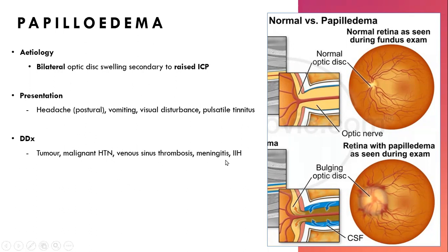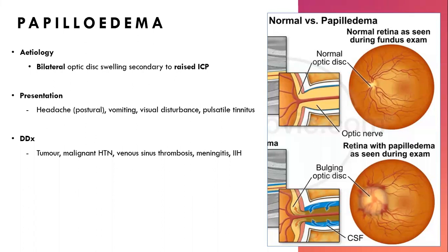Differentials for papilledema: most cases end up being idiopathic intracranial hypertension (IIH), but that is a diagnosis of exclusion. First you must rule out a tumour. Even before that, malignant hypertension can cause this, so the first test you do is a bedside blood pressure. Then neuroimaging — CT is quickest, but an MRV is needed to definitively rule out venous sinus thrombosis. A full neurological exam is also needed. Once a space-occupying lesion is excluded, a lumbar puncture with opening pressure measurement is the definitive test for raised ICP.